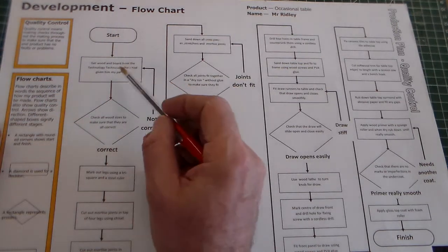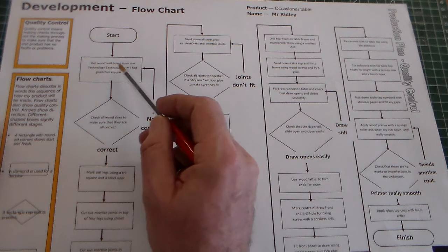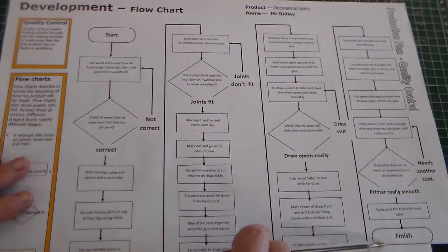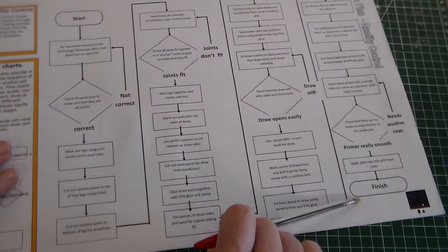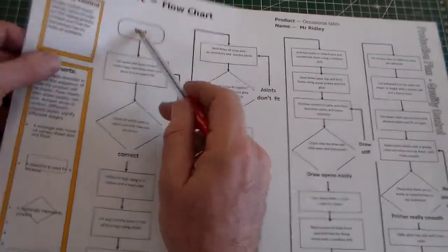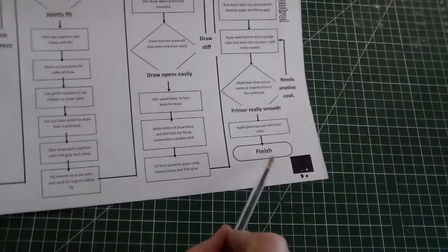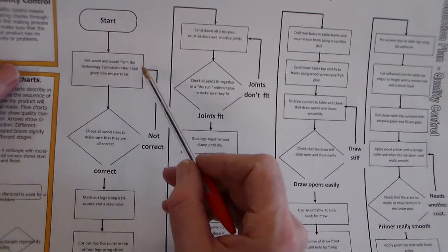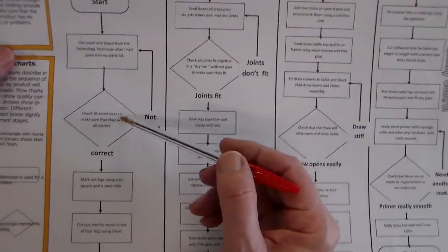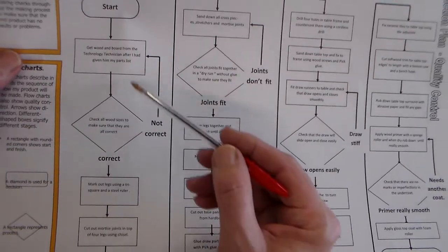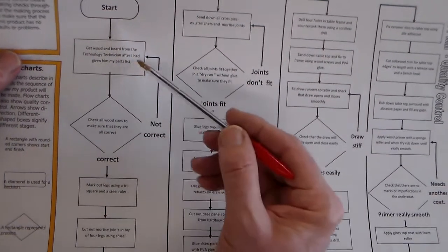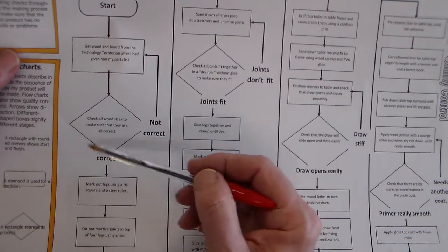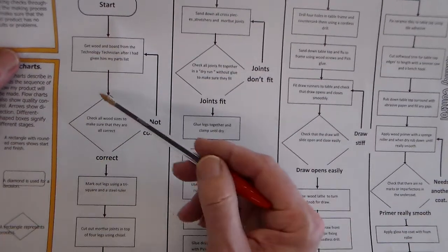We've got a rectangle with rounded corners for the start and finish — these are called terminals. Then we have rectangles for processes, describing a process step. A diamond shape is used for a decision.